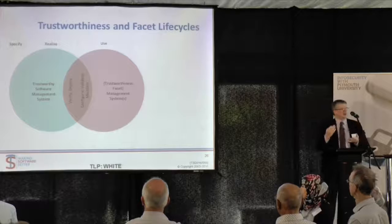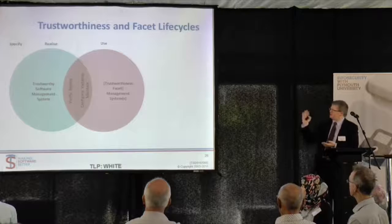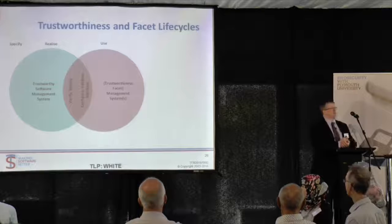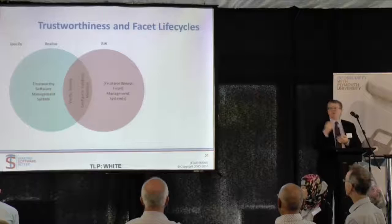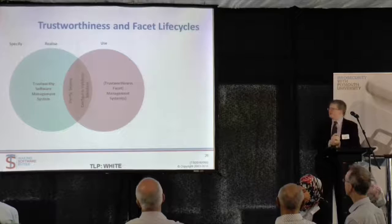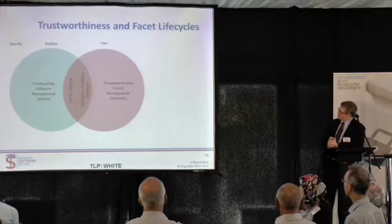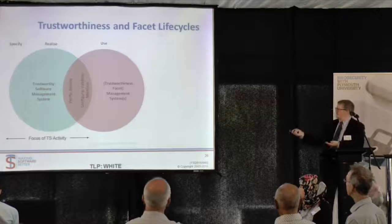Here's another familiar Venn diagram — this looks at the life cycle and how trustworthy software links into other areas of management. We say there's a simple life cycle. Many people know ISO/IEC 15288, which defines 11 stages of a systems life cycle — rather too many to deal with. So we say there are three fundamental activities: specifying things before you start, realizing — making — it, and then using it. Those are the three big chunks.